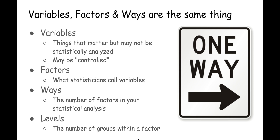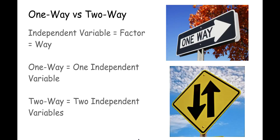You are already familiar with the idea of variables. Independent variables are the things that vary between groups of participants. Dependent variables are the outcome measures that we compare between groups. Factors are what statisticians call variables, and ways are the number of factors in your ANOVA. Levels are the number of values a factor can have.